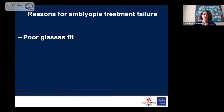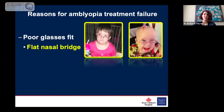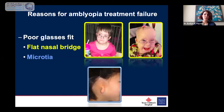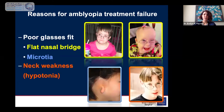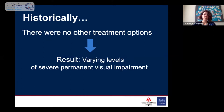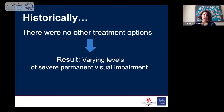Other reasons for treatment failure in refractive amblyopia include poor glasses fit, such as children with Down syndrome or other craniofacial abnormalities with a flat nasal bridge where glasses fall down their face. Patients with other anatomic abnormalities of the face, such as microtia, which makes it difficult to fit glasses. And children with cerebral palsy or other reasons for neck weakness where glasses ride down in an unusable way. Historically, there was really no other treatment option — these patients routinely would fail, resulting in varying levels of severe visual impairment.